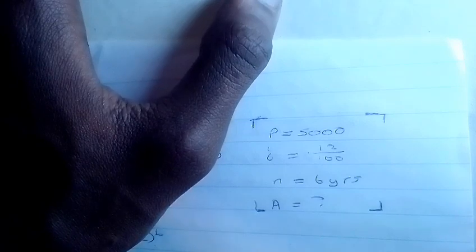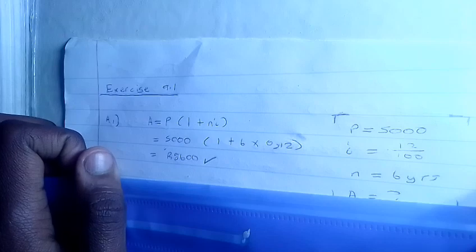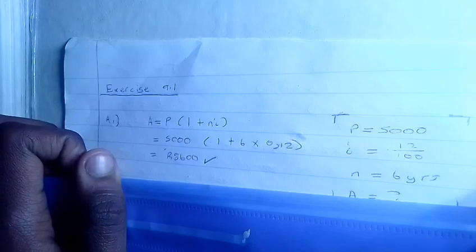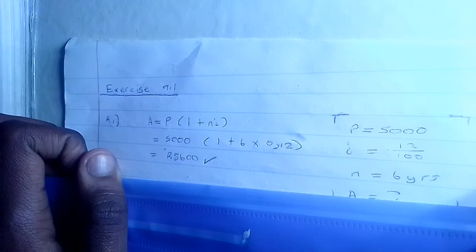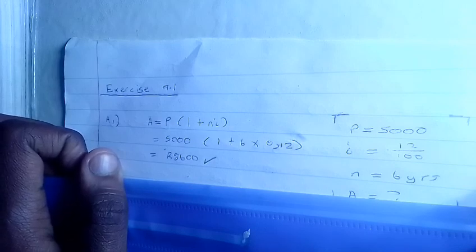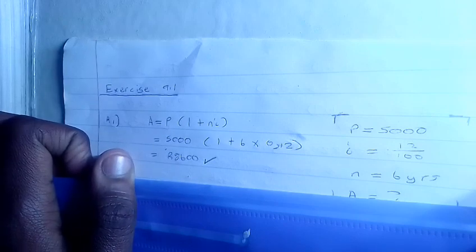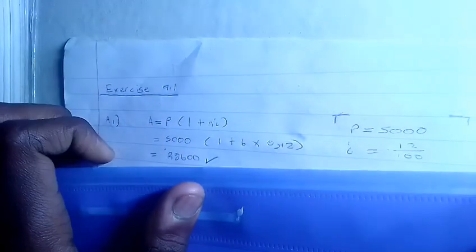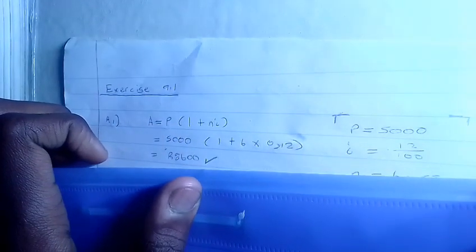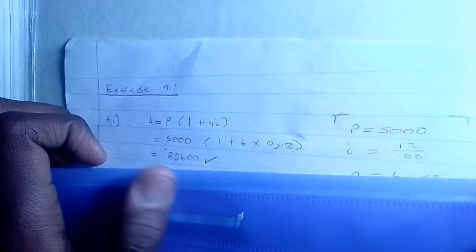Since they say simple interest, this is how we do the equation. You put the formula for simple interest, which is A = P(1 + n × i), which is 5000(1 + 6 × 0.12), which gives us an answer of 8600.